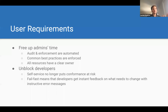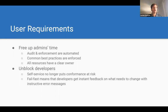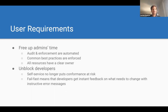Back to user requirements for Agile Bank. From the admin side: free up admin time, automate audit and enforcement, enforce common best practices, and ensure all resources have a clear owner. From the developer side: unblock developers so admins no longer stand in the way, make self-service no longer a risk to conformance, and enable fail-fast — give developers instant feedback on whether their resources are compliant.